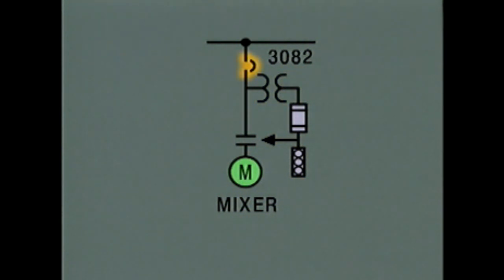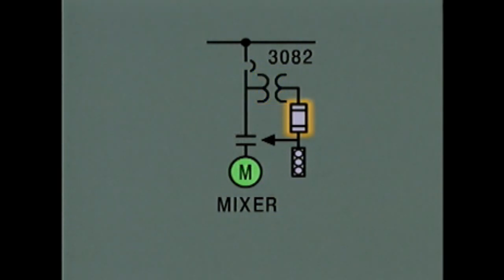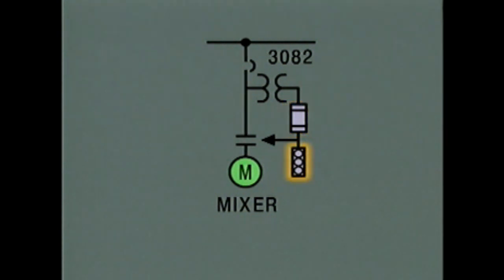In the power circuit, power passes through a circuit breaker and a contactor to the mixer motor. In the control circuit, three components are shown. A potential transformer reduces voltage. A fuse interrupts the flow of power in the circuit if the current in the control circuit gets too high. And a start-stop switch is used to operate the motor.